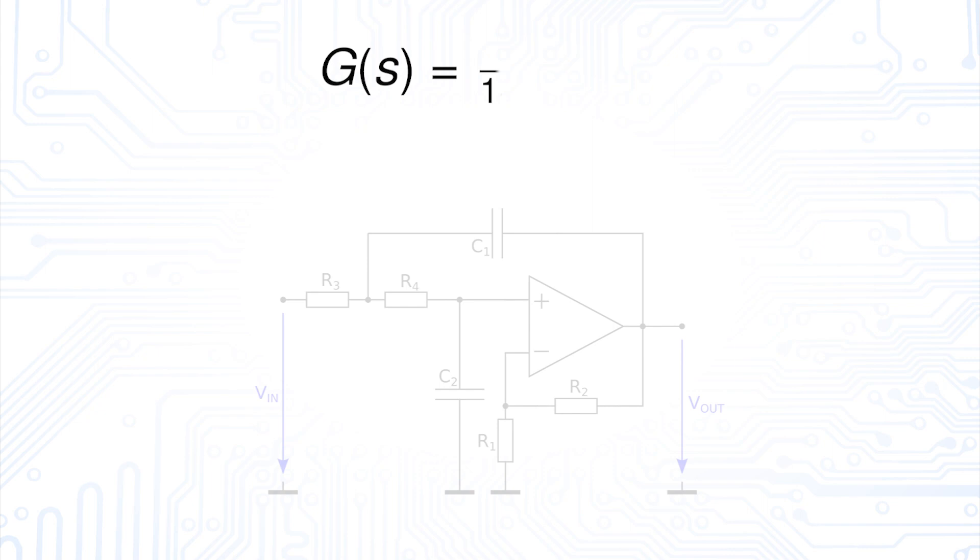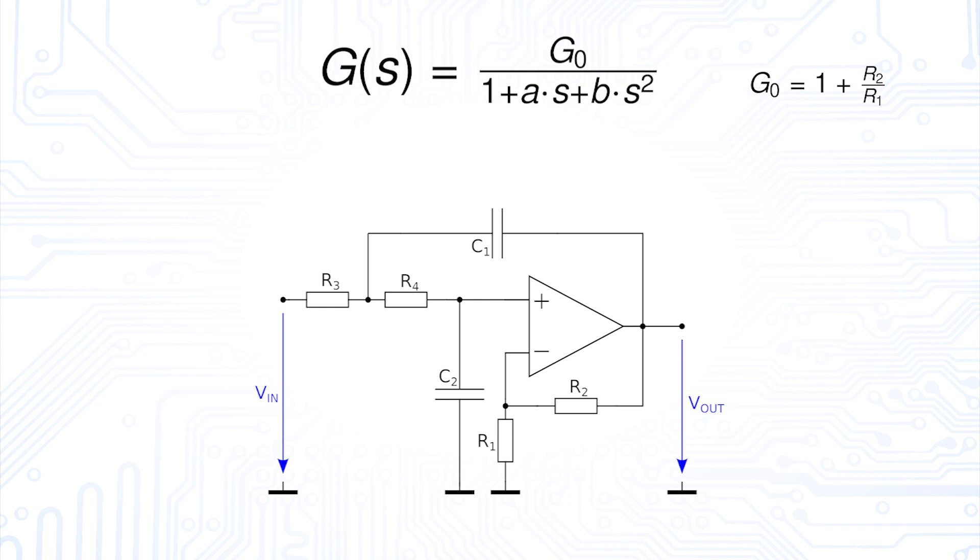To understand how such filter circuits can be designed, let's first look at their transfer function. We see a formula that consists of the gains set by the non-inverting amplifier circuit and a term in the denominator which contains the coefficients a and b.